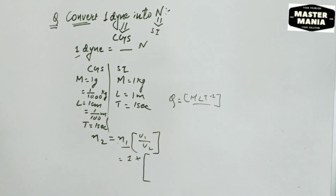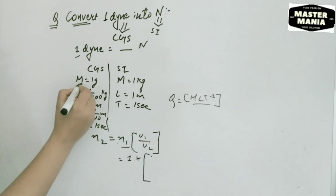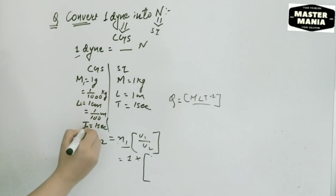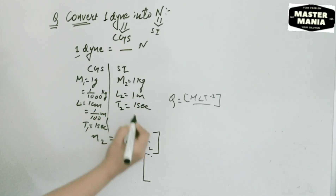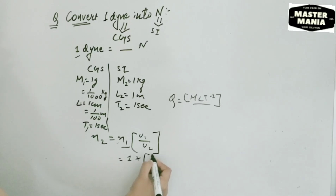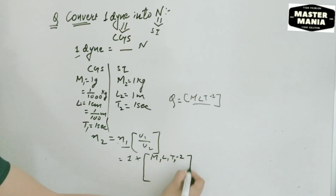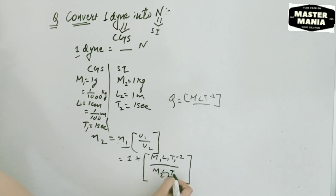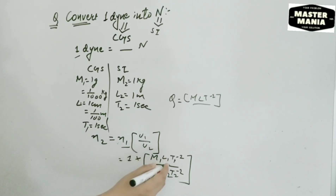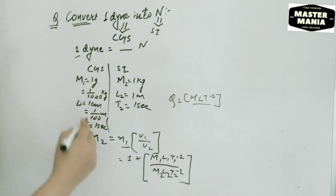So in this format only we need to write U1 and U2. We take M1, L1, T1 for the CGS system and M2, L2, T2 for the SI system to avoid confusion. So here we write M1 into L1 into T1 to the power minus 2, divided by M2 into L2 into T2 to the power minus 2. Now let us put the values of M1, L1, and T1 respectively.